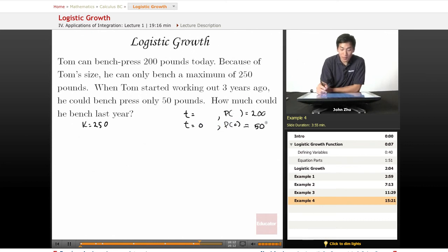How much could he bench last year? So we're looking for a T equals value. Well, if he started working three years ago, that means our T value here is going to be 3. And for how much he could bench last year is going to be 2.